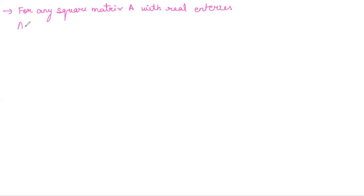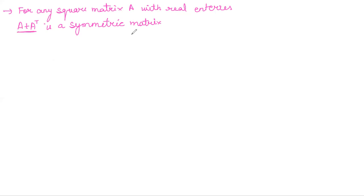Here are two important results you will always remember: first, A plus A transpose is always a symmetric matrix, no matter what square matrix A you take. Second, A minus A transpose is always a skew-symmetric matrix. We will prove these one by one.